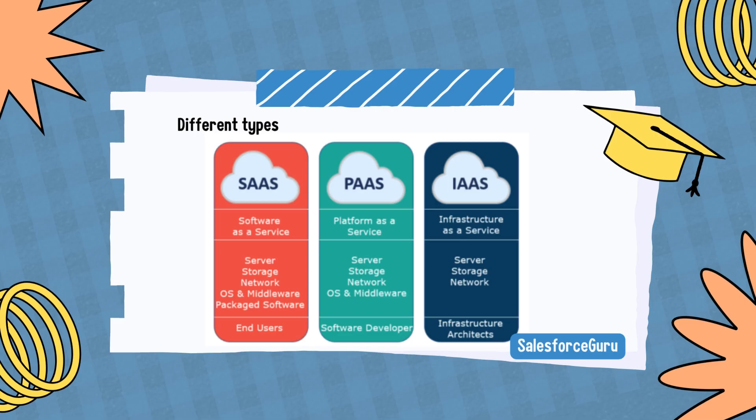Software as a Service, SaaS, involves the licensure of a software application to customers. Licenses are typically provided through a pay-as-you-go model or on-demand. This type of system can be found in Microsoft Office 365.